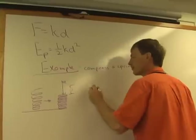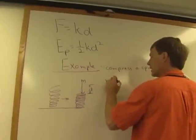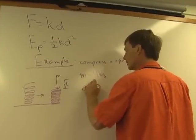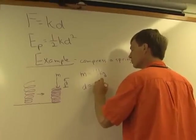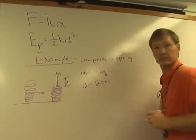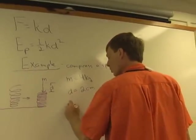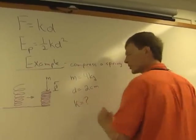And it's going to compress it a distance d. So let's say the mass is 4 kilograms. And the displacement, d, is 2 centimeters. I want to know, what's the spring constant?